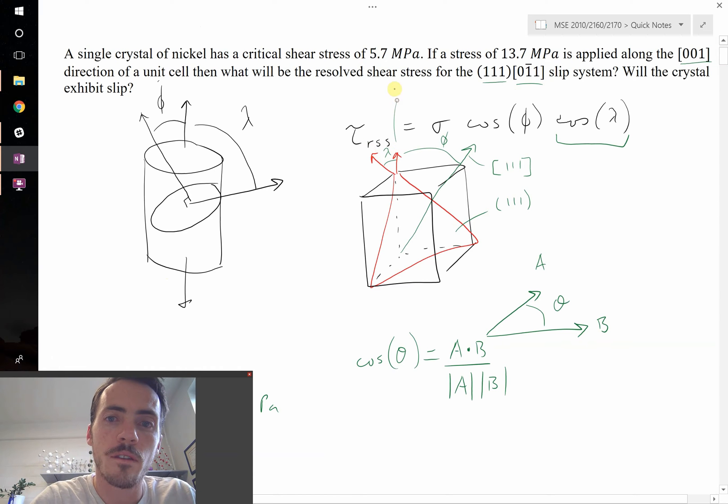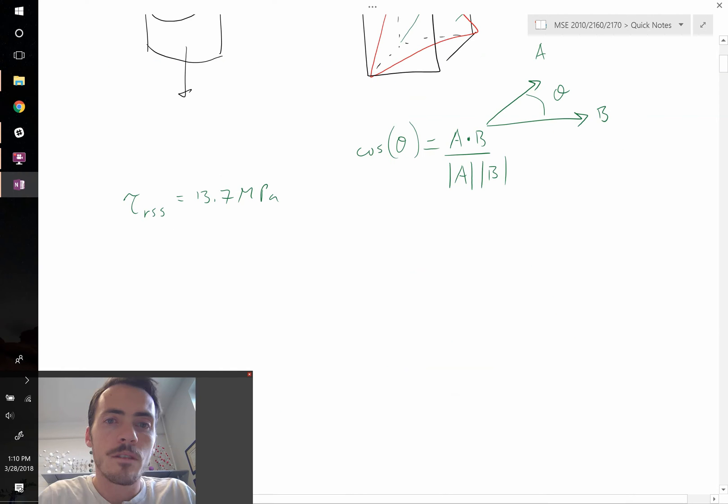That's between the [001] direction and the [0̄11] direction. So the dot product is going to be between (0,0,1) and (0,-1,1). Let's take that dot product: that's 0 times 0 plus 0 times -1 plus 1 times 1. That's all going to be divided by the length of (0,0,1), which is 1, and the square root of (-1)² + 1², which is √2.